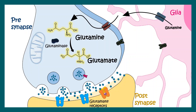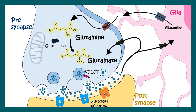Once glutamate is synthesized, it gets packaged into synaptic vesicles with the help of V-glut transporters, or vesicular glutamate transporters. Ultimately these synaptic vesicles are released into the postsynapse. Once present in the synaptic cleft, glutamate doesn't stay for a long time — it gets reuptaken by the glia and neuron with the help of excitatory amino acid transporters.